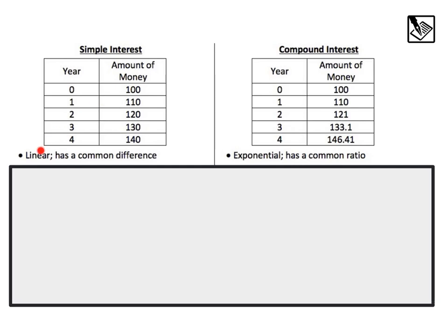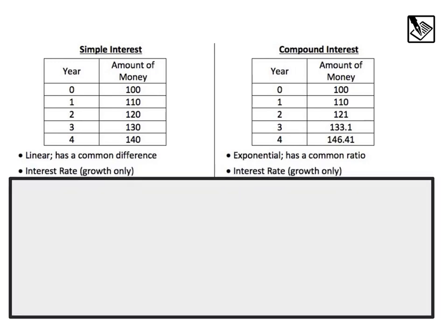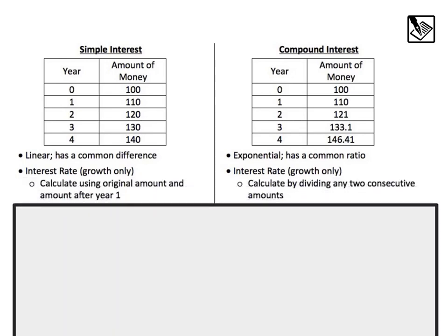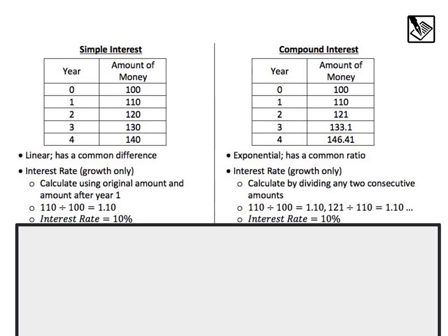Simple interest is linear — it has a common difference, adding the same amount every time. Compound interest has a common ratio, so it is exponential. When we calculate the interest rate, we're talking about the growth only. For simple interest, we use the first value divided by the original value: 110 divided by 100 gives 1.1, so the growth part is 0.10, or 10%. That 1 takes care of the original amount, then we add the 10% more.